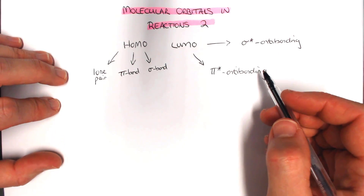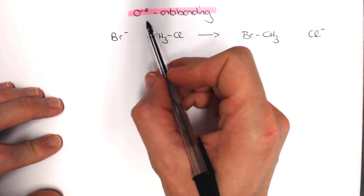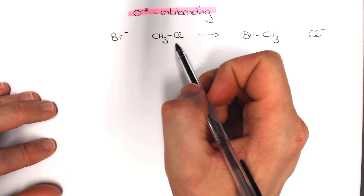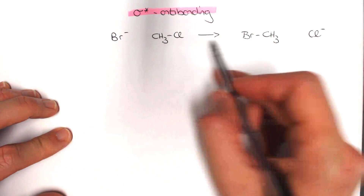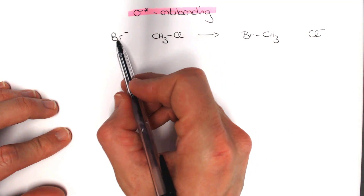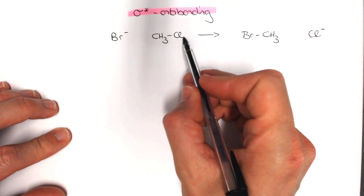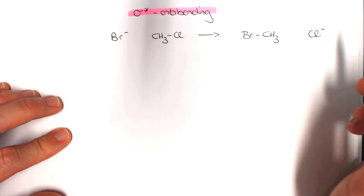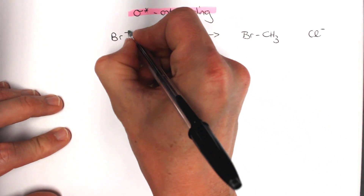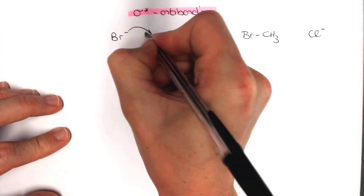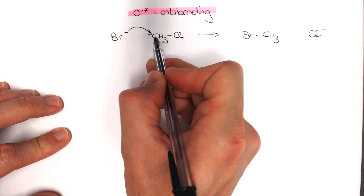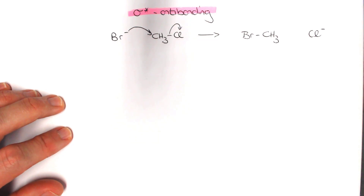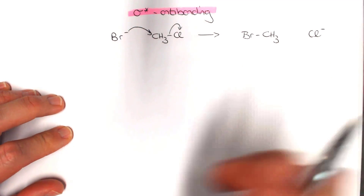Let's start with the sigma star antibonding orbital. A typical example is a substitution reaction. Here Br⁻ acts as a nucleophile, substituting the chlorine on methyl chloride to give bromomethane and Cl⁻. In organic chemistry we use curly arrows — the negative charge, which is the lone pair of electrons, adds to the carbon. This is an SN2 reaction, so as that happens, the carbon-chlorine bond breaks and we get our reaction product with a new sigma bond formed.